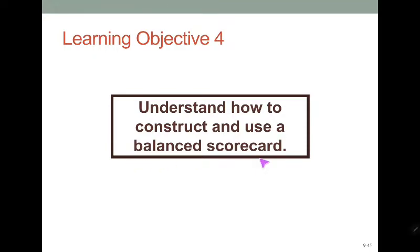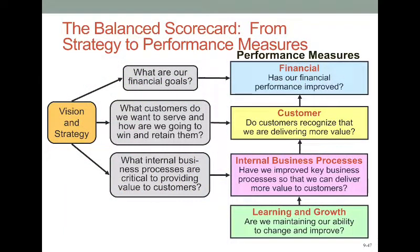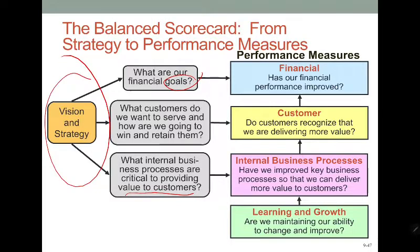Now let's move on to the balanced scorecard — how do we construct it? We have to know the different perspectives: financial, internal business process, customer, and learning and growth, which all influence performance. We have to know our financial goals, understand what customers' needs are, and look at processes to provide value to customers. It all starts with vision and strategy.